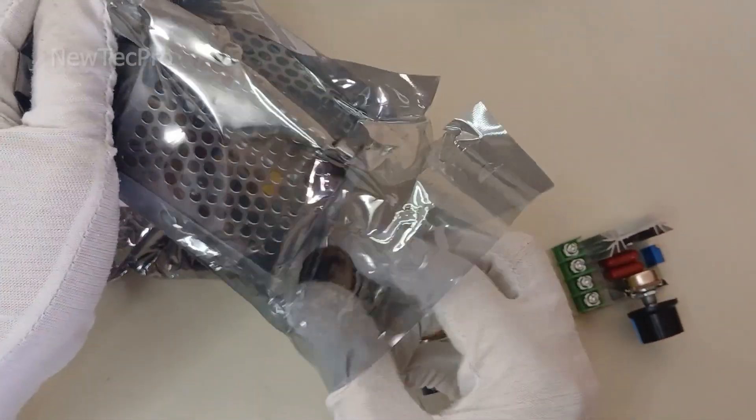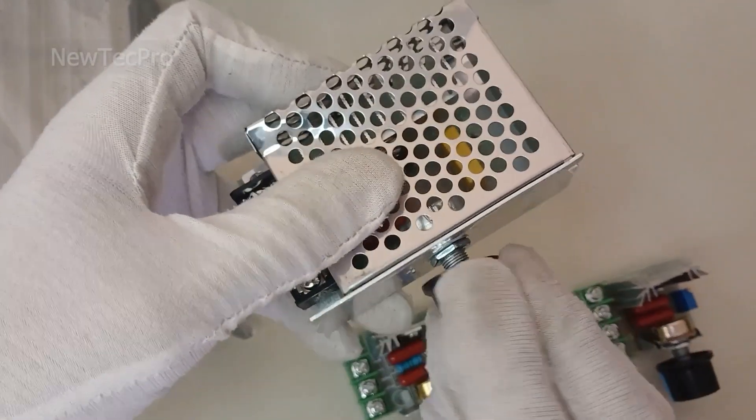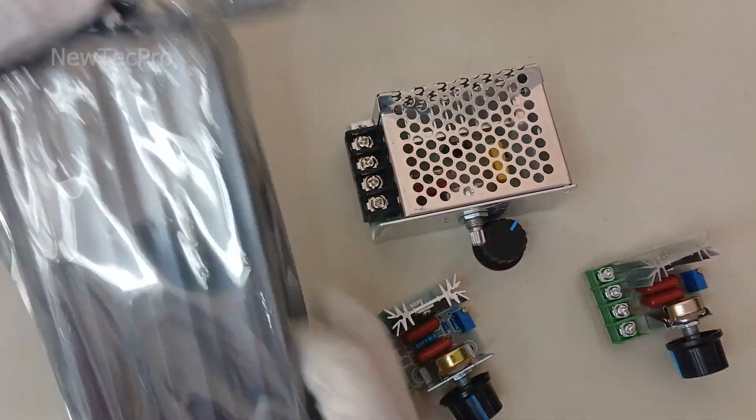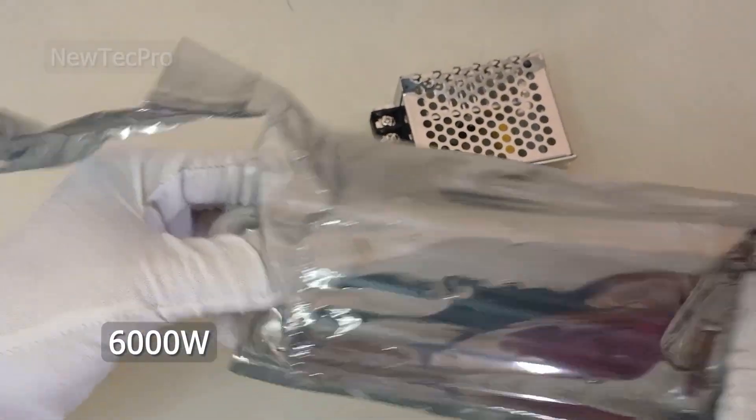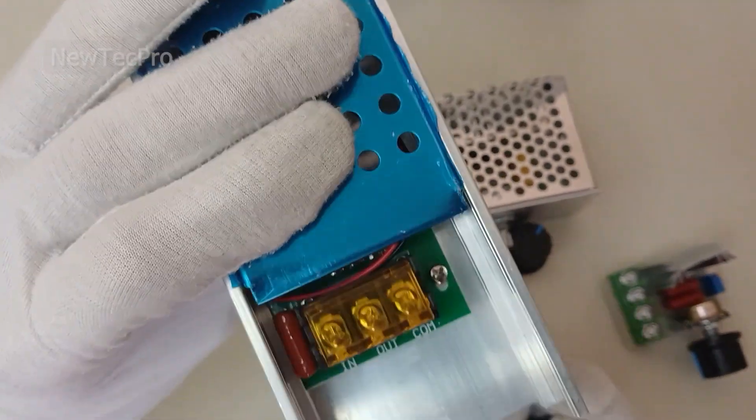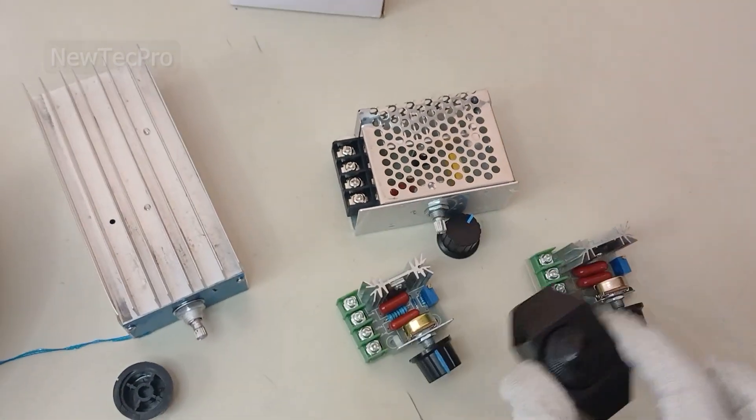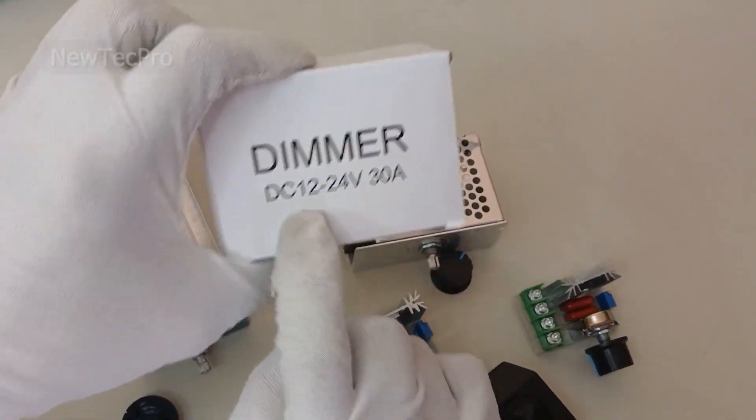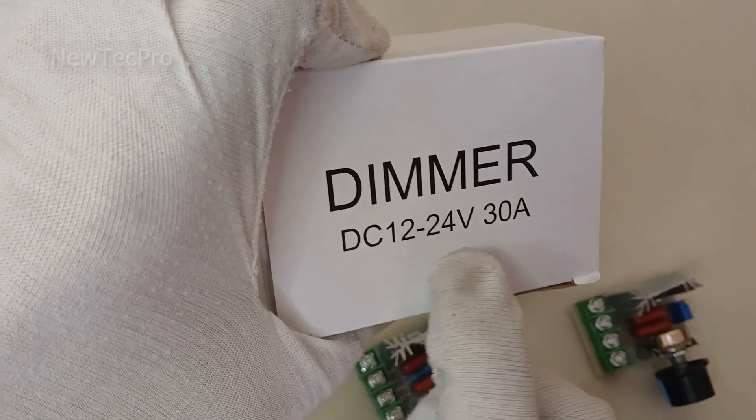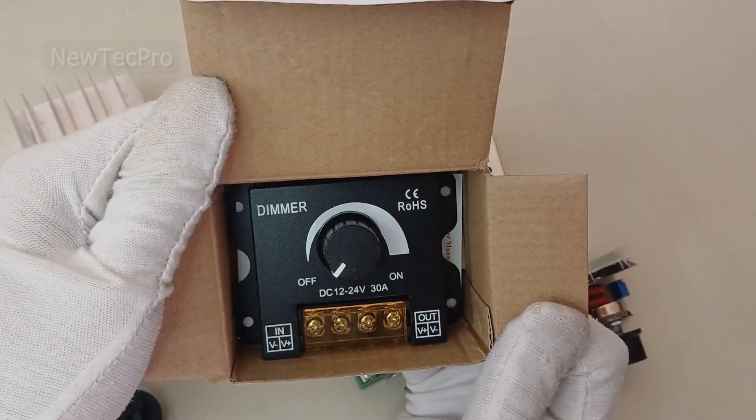As you can see here, this is a 4000 watt AC dimmer, this is a 6000 watt AC dimmer, and a 1000 watt dimmer, and finally a DC 30 amp dimmer.